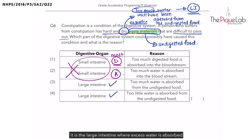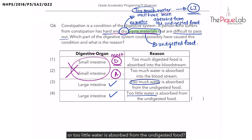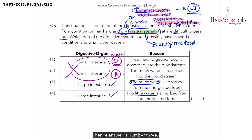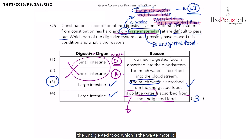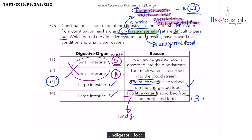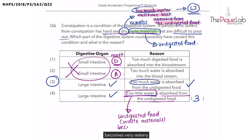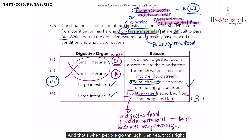As mentioned, it is the large intestine where excess water is absorbed from the undigested food. Too much water was absorbed from the undigested food, so the answer is number three. Now let's also discuss what happens when too little water is absorbed: the undigested food becomes very watery or wet — that's when people go through diarrhea.